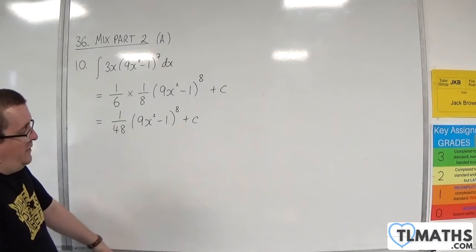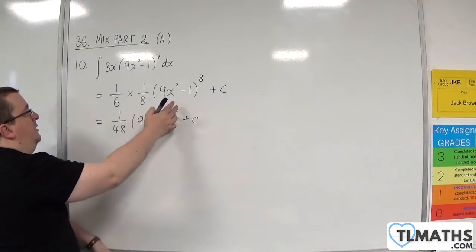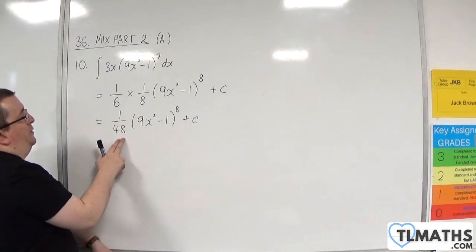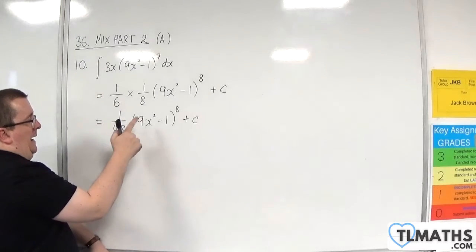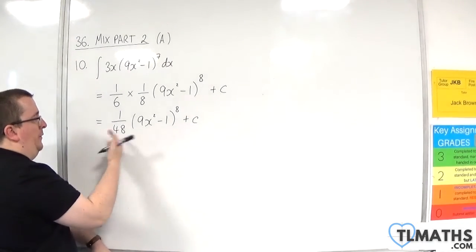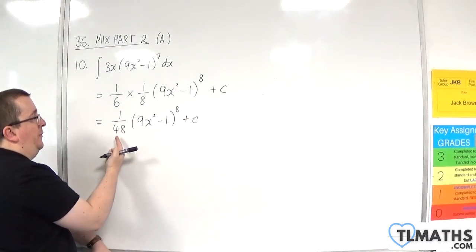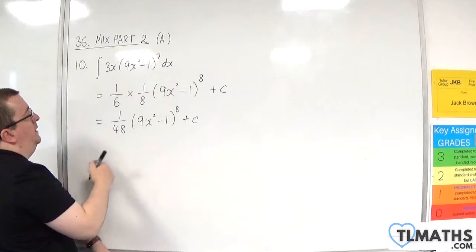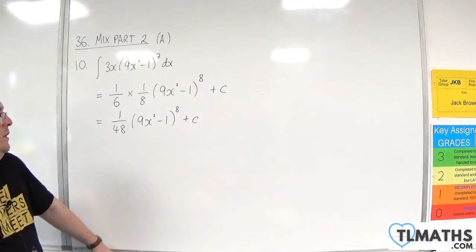Now, you can obviously double-check that. We've got the 8 is going to come down, multiply with the 1 over 48 to make 1 sixth. And we've got 18x coming outside, so 18x divided by 1 sixth is the 3x. And we're going to take 1 from the power as well.